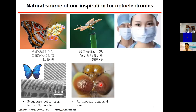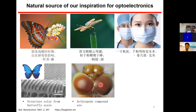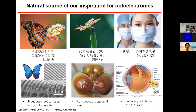Now let's look at ourselves. Our eyes are definitely very important. The human eye is a single eye, not a compound eye. It has a delicate structure with iris, pupil, and lens. This structure will be the focus of today's seminar, and I'll tell you more about it later.